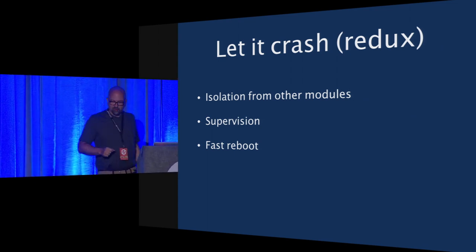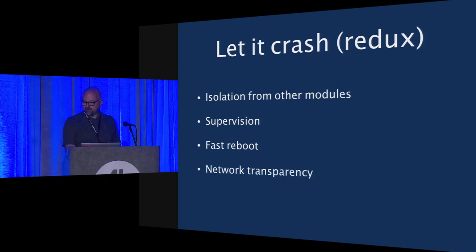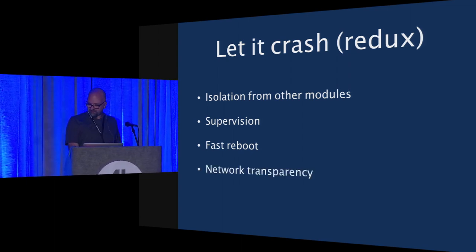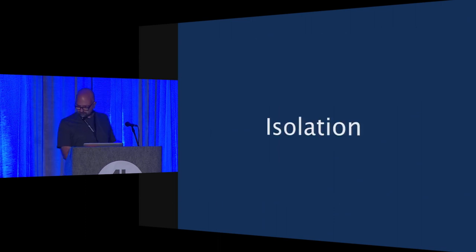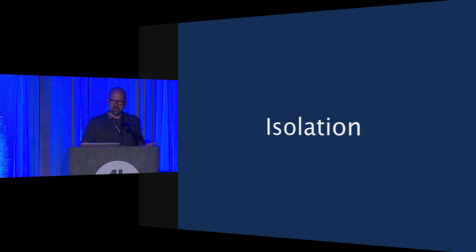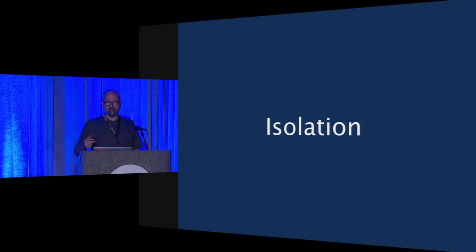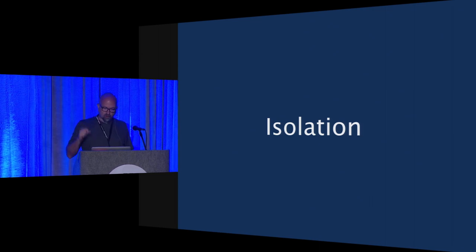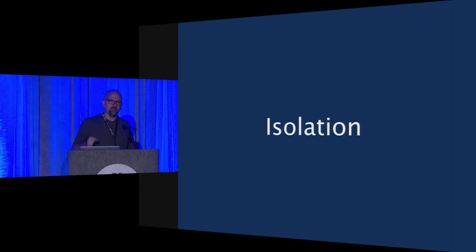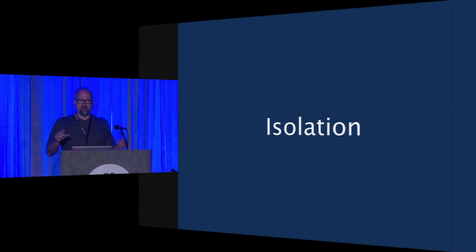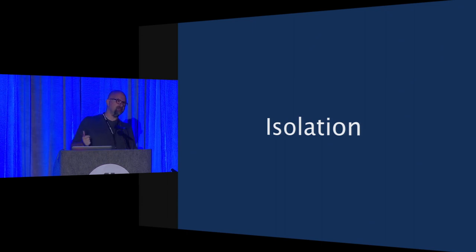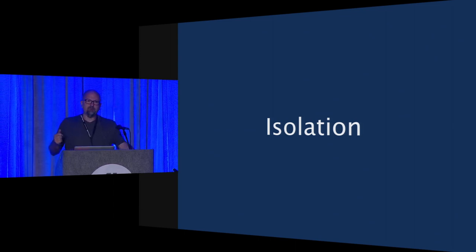Returning from the digression: let it crash. What do we need? We need isolation, supervision, fast reboot, network transparency, and explicit state management. For isolation — we don't want data corruption to leak between processes. Processes should be able to reboot in isolation without impacting anything else. We don't want shared memory, as that leads to data corruption spreading throughout your environment. Instead we want asynchronous messaging, because synchronous messaging is fragile and tightly coupled.